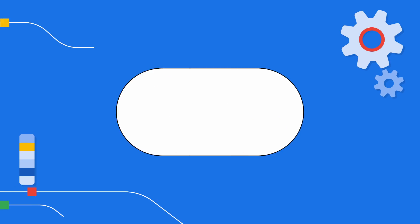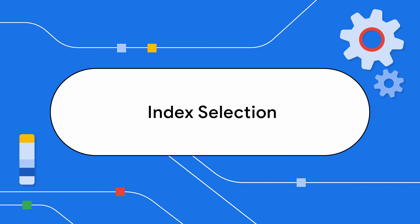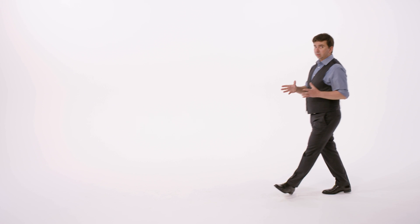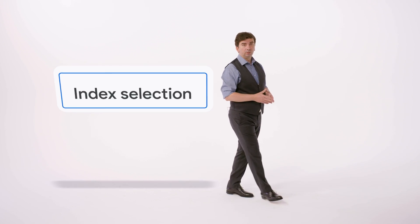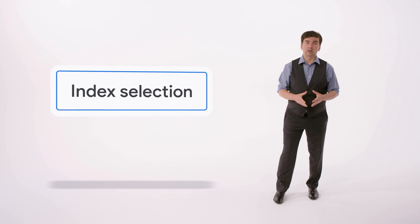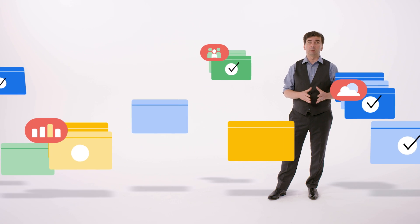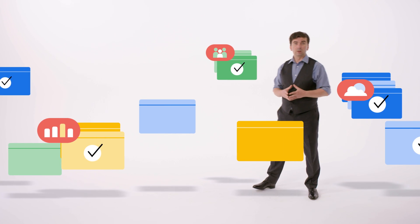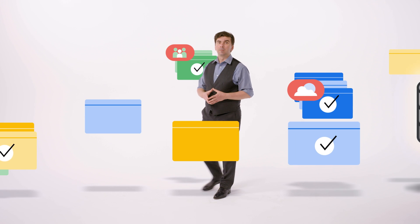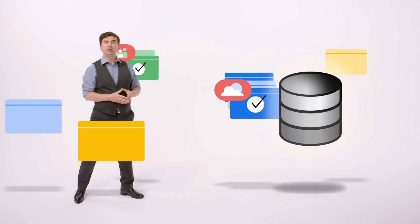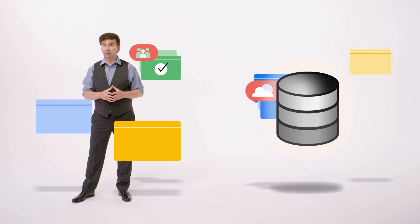Let's move on to index selection. Once the signals are collected and duplicates are handled, Google decides whether or not to index the page — a process called index selection. It largely depends on the quality of the page and the signals previously collected. If a canonical page does get indexed, then Google stores the information collected about it and its cluster in the Google index.